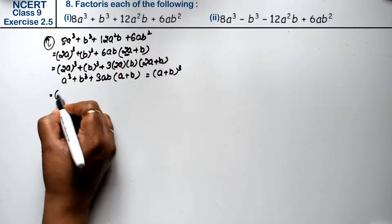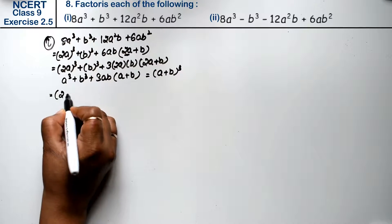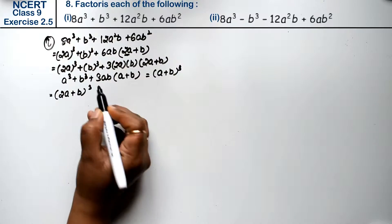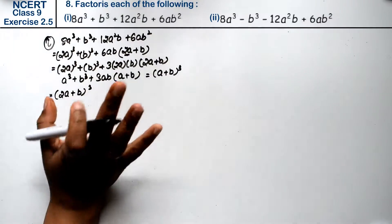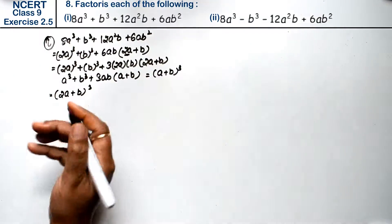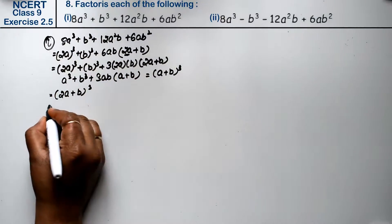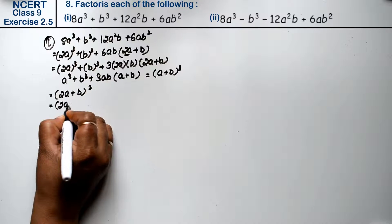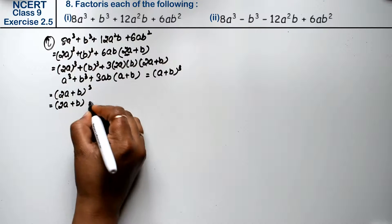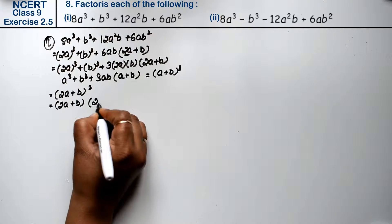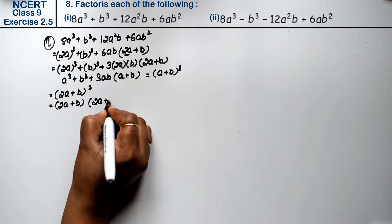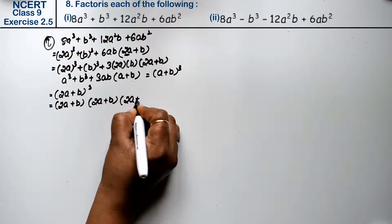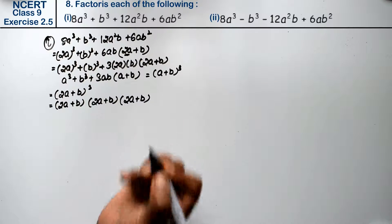From a cube, and 2a goes as the whole cube, and 2a plus b. So from factorizing, you can find it like this: (2a plus b) and (2a plus b). So (2a plus b) whole cube is the answer.